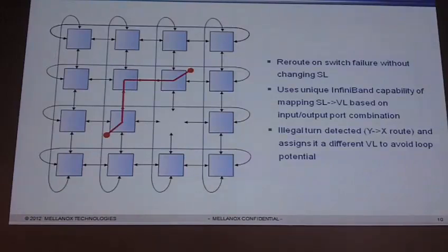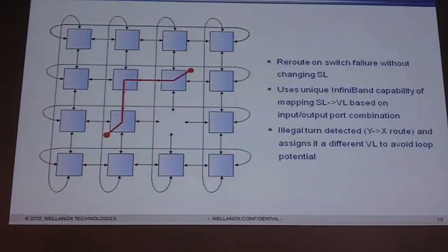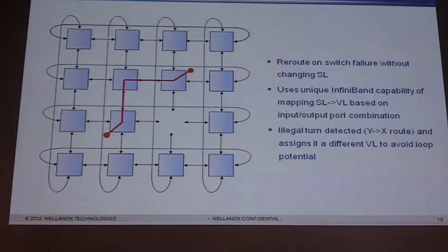It'll put it back to normal and the SL can stay the same. The key is the SLs never change. Once the failed switch comes back online, the subnet manager recognizes it's a valid Taurus again and puts it back — because it doesn't want to keep the rerouted state in case another switch fails. That's why it wants to restore to the original routing.